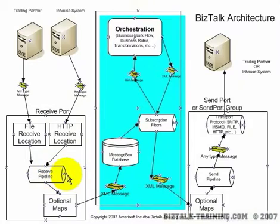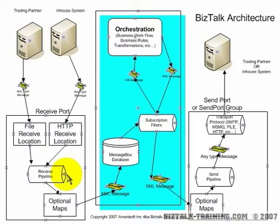Out of the box, BizTalk provides two standard pipelines. The first one's called the pass-through pipeline. Pass-through would only be used if you want to pass a non-XML file — a file that BizTalk does not actually parse — but can be passed through the system. The most common one is the XML receive pipeline, and that will basically take the files that are coming in and translate them to XML if they're not already XML.